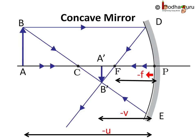And f is also negative here, so u, v, and f are negative in concave mirrors in most cases.